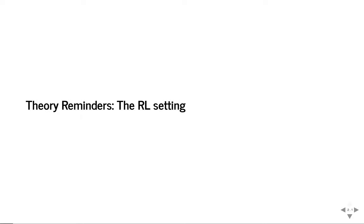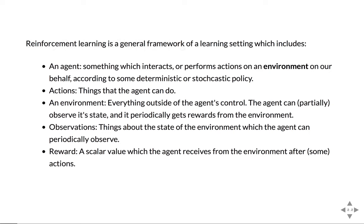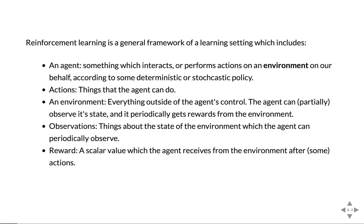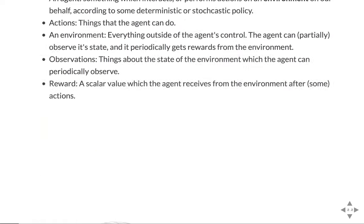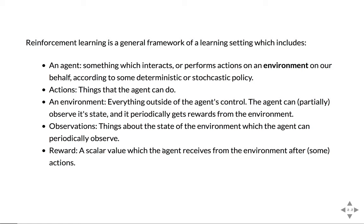First we have to remind ourselves about reinforcement learning. This theory part will be a bit longer than usual because it's very relevant to the model we're going to implement. In the setting of reinforcement learning, we have the following components: usually we have an agent that can perform some actions A on the environment. The environment has some internal state that the agent can't necessarily see, but he can see some observations representing some part of its state, and he gets reward for the actions that he performs.